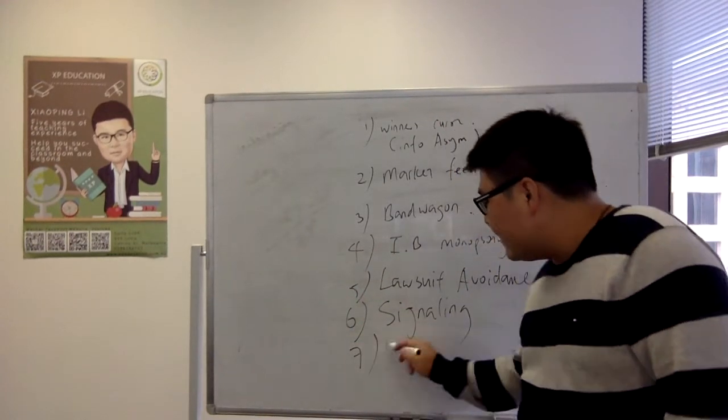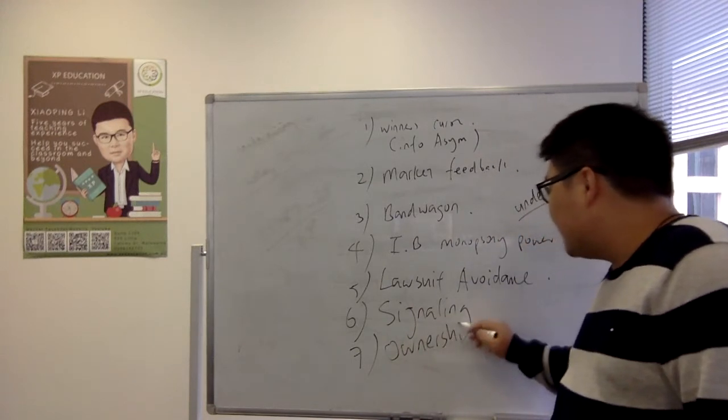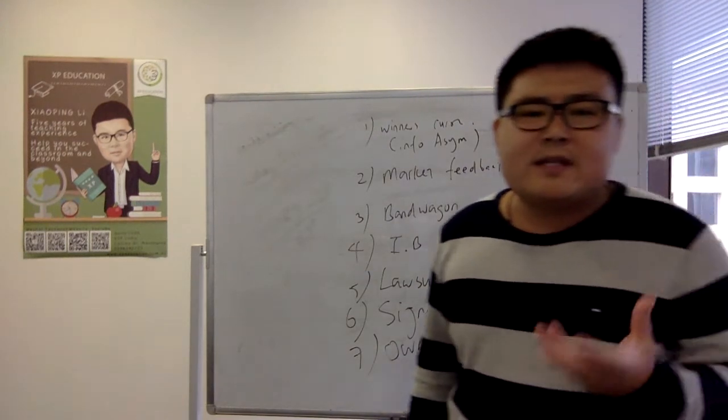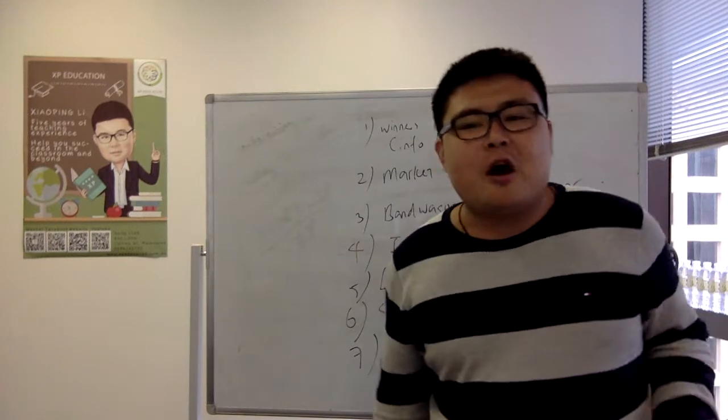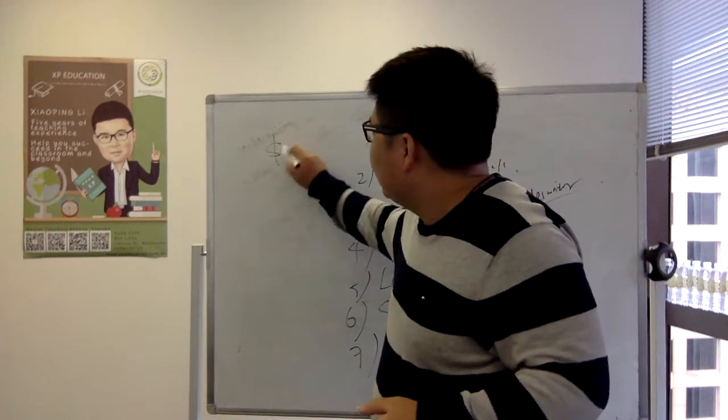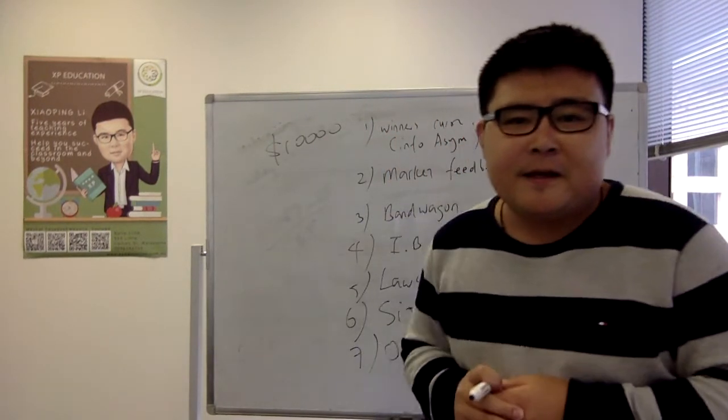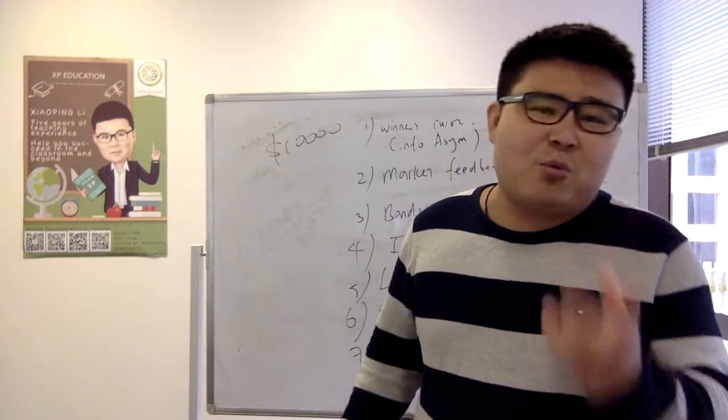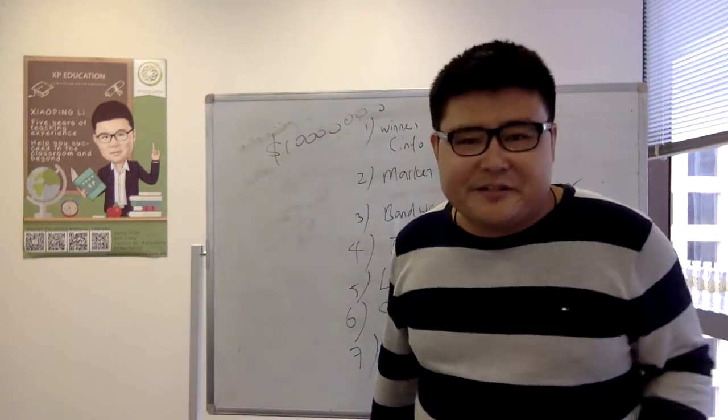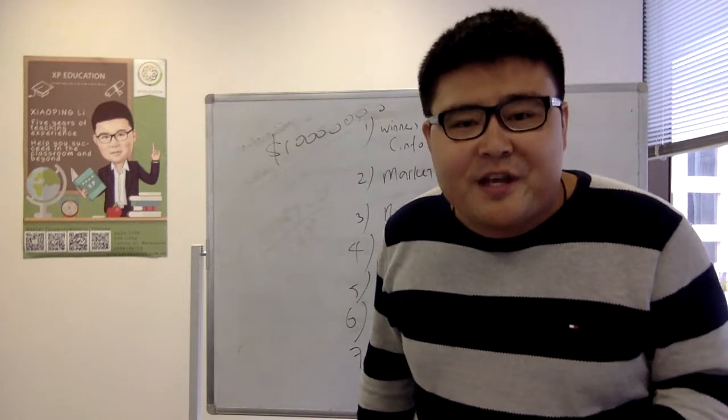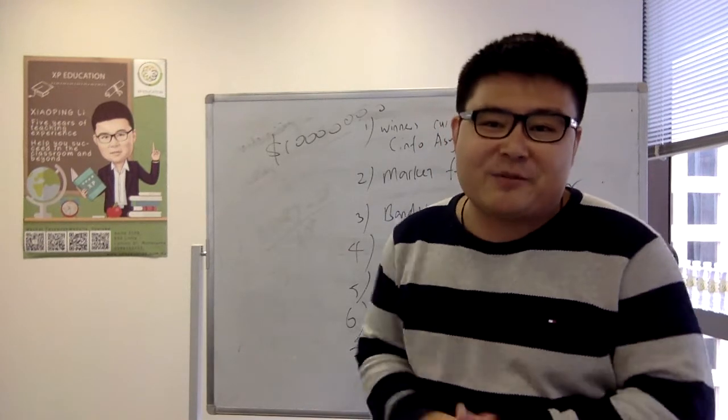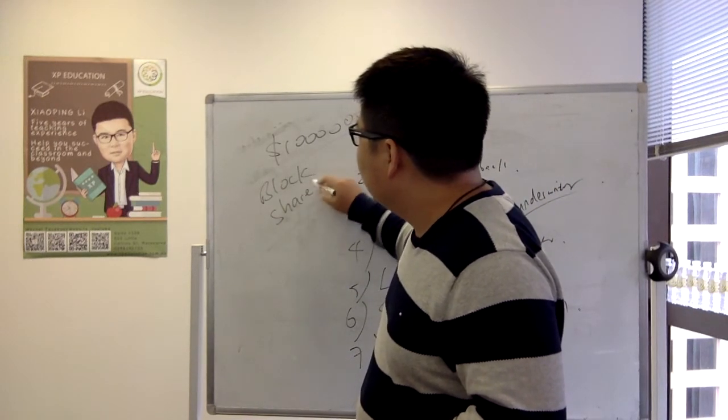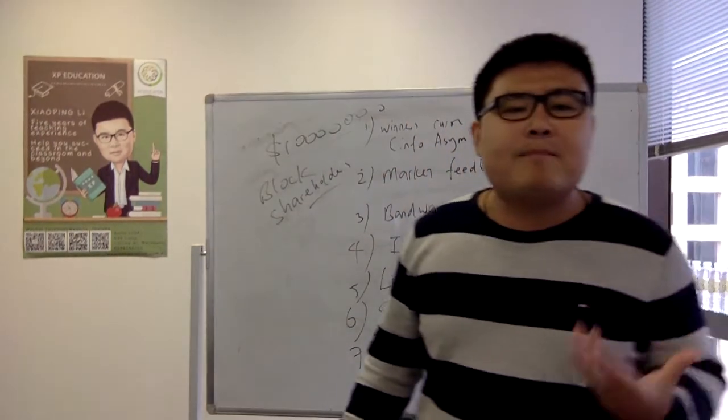Now, the last one is about this ownership dispersion. Now, ownership dispersion, what does it mean? Now, imagine that the stock for Alibaba is worth $10,000 per one share. Well, it might be pretty much very rich to buy their shares. Now, imagine that each share is like $10,000. I'm going to make a more ridiculous example, like a million dollars. Now, this means that not many shareholders will actually afford these shares. So, this creates a situation where we're called block shareholders. Now, what does it mean by block shareholders?